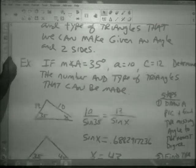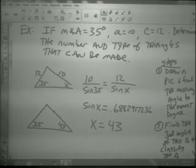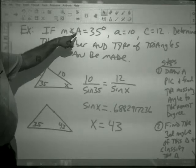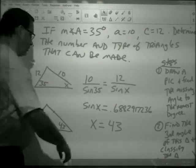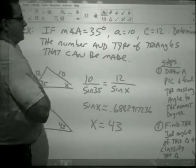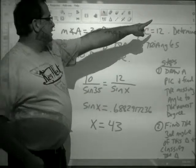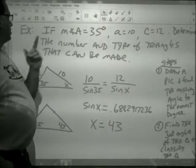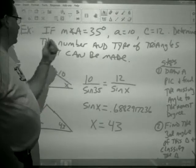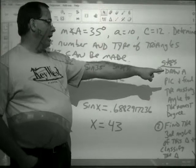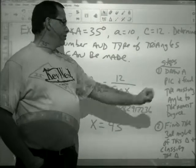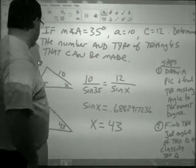For example, let's say I have a triangle. Angle A is 35 degrees, little a is 10, little c is 12. Determine the number and type of triangles that can be made. First step, draw a picture and find the missing angle to the nearest degree.